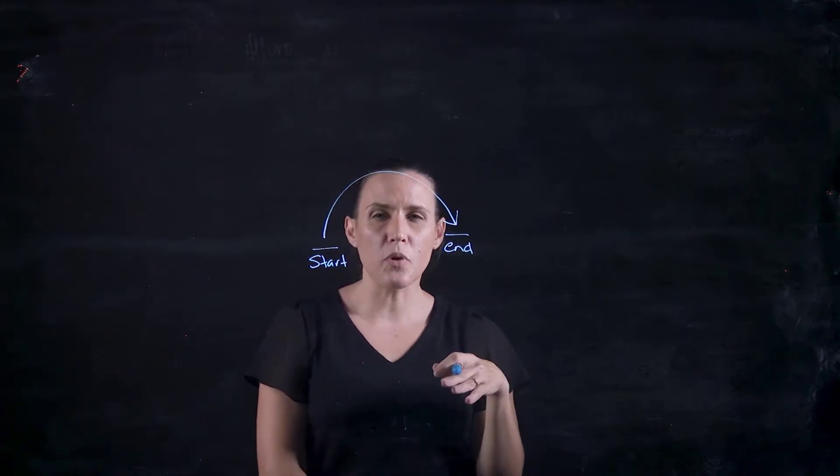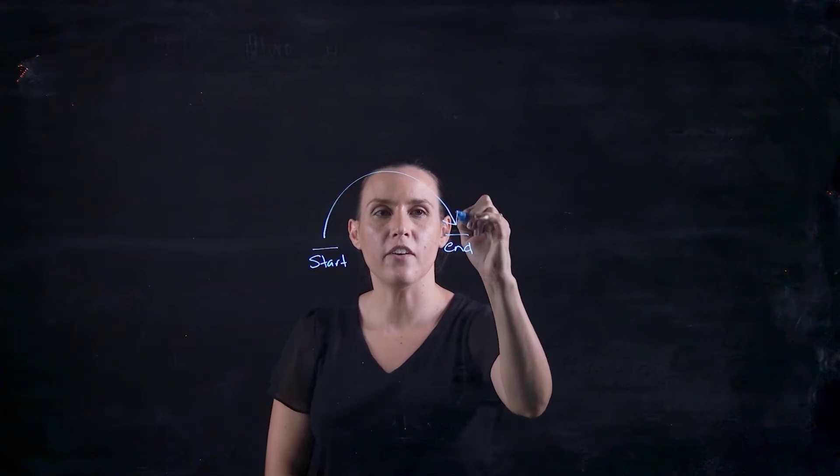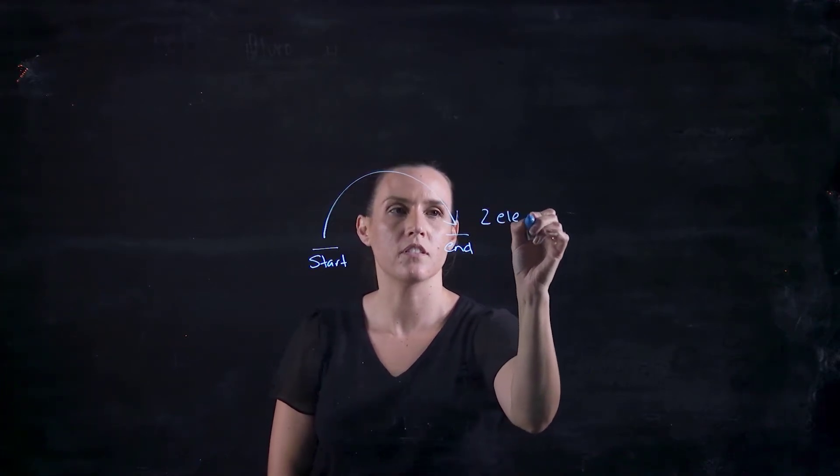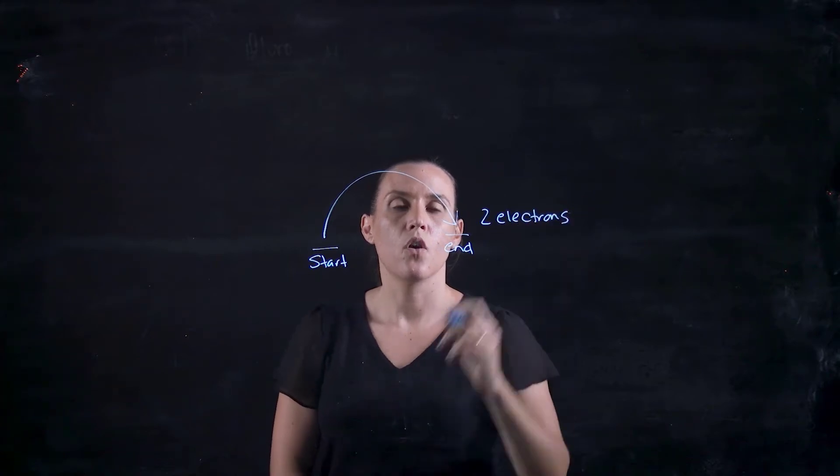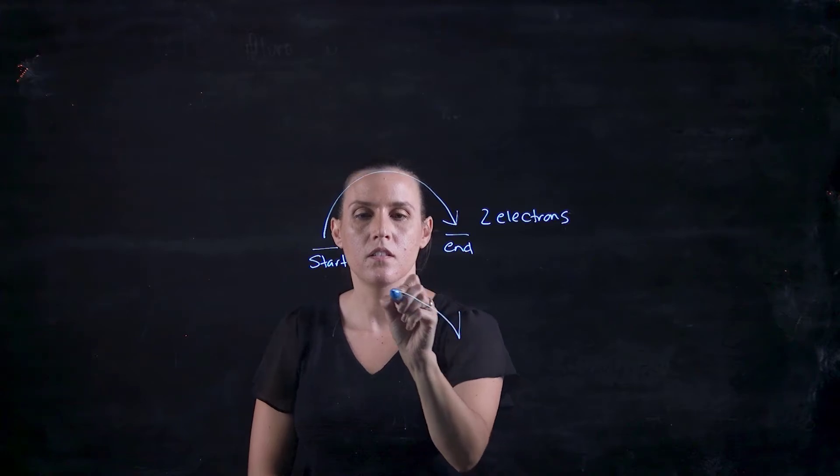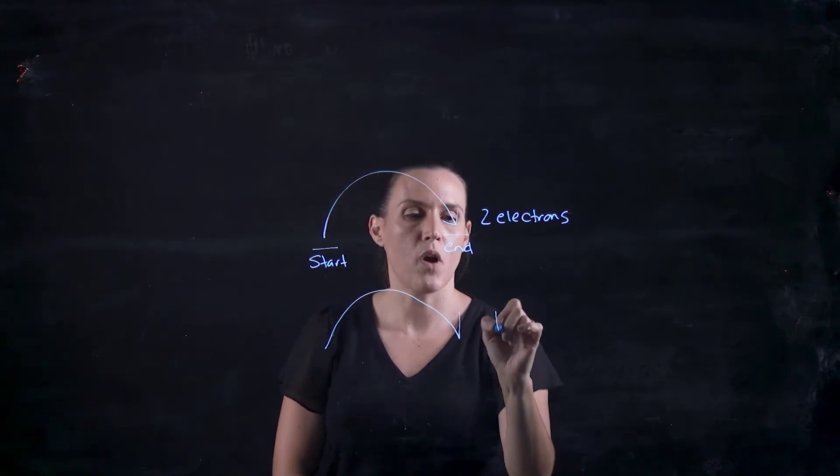Now, a little bit further in on what that arrow means. When I have a double headed arrow, like this one here, that's two electrons. When I have a single headed arrow, so that's a single headed arrow, that's one electron.